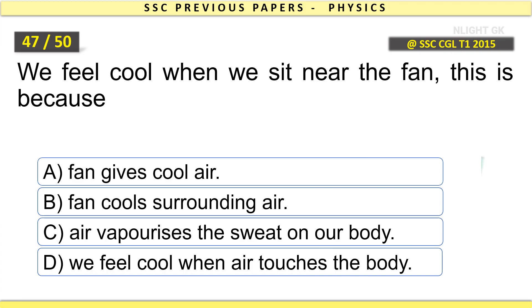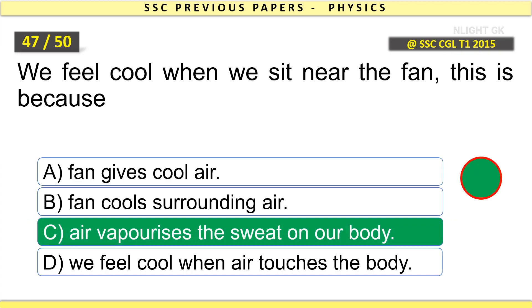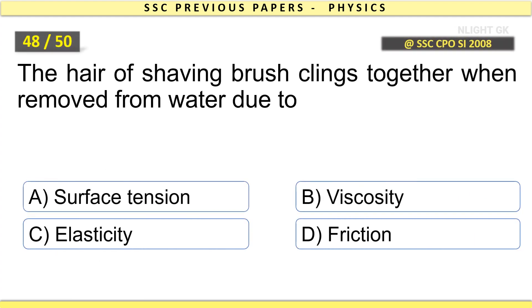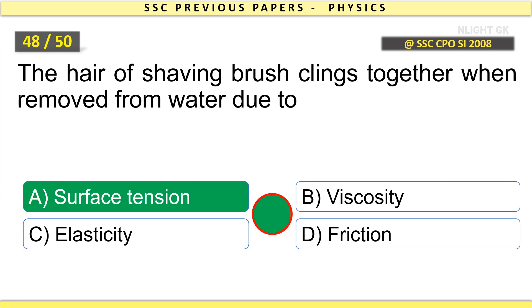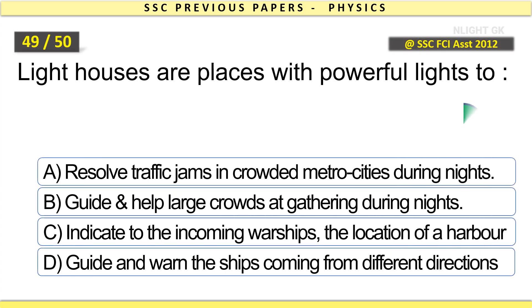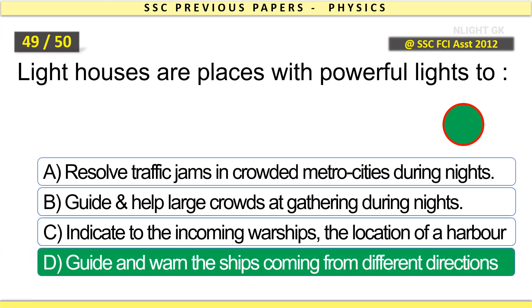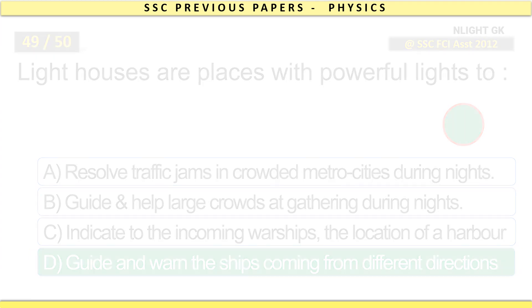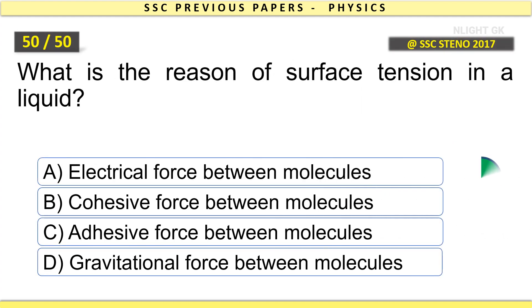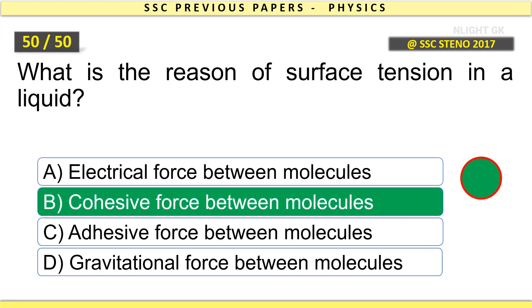Kelvin is the unit of measurement of temperature. Which of the following is indicated by the color of a star? Temperature. We feel cool when we sit near the fan because air vaporizes the sweat on our body. The hair of shaving brush clings together when removed from water due to surface tension. Lighthouses are places with powerful lights to guide and warn the ships coming from different directions. What is the reason of surface tension in a liquid? Cohesive force between molecules.